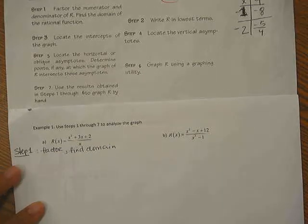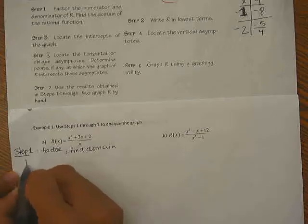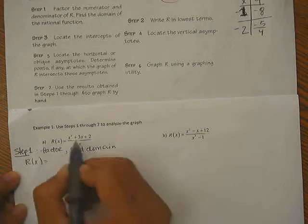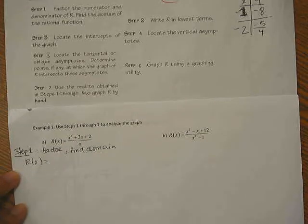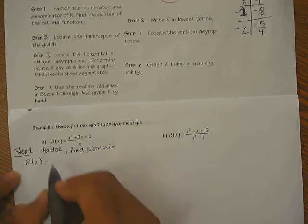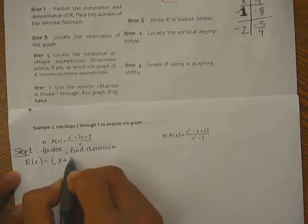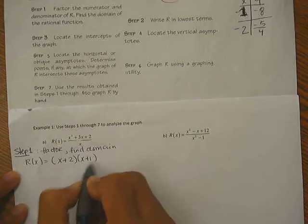So that's really what step number 1 is. So let's try to factor it out. R of x equals, I'm going to give you 30 seconds to try to factor out your numerator. Hopefully you have x plus 2 times x plus 1, and then the denominator you can't really factor that because it's just a monomial.